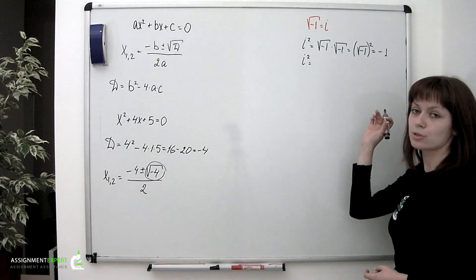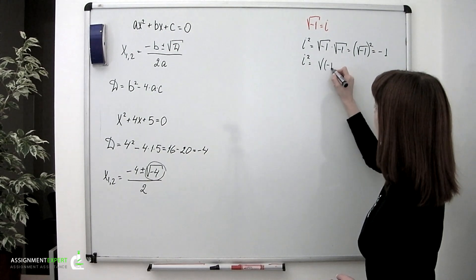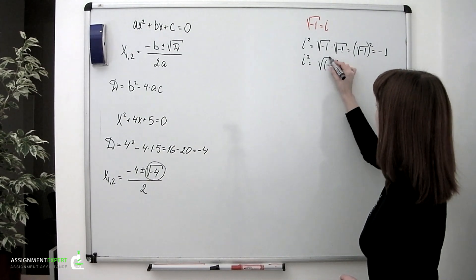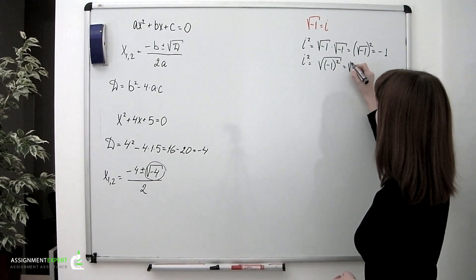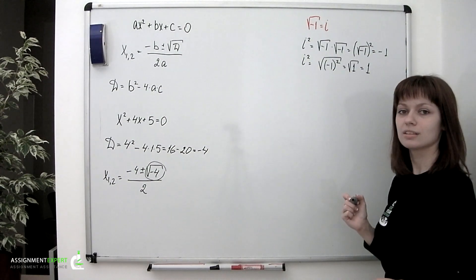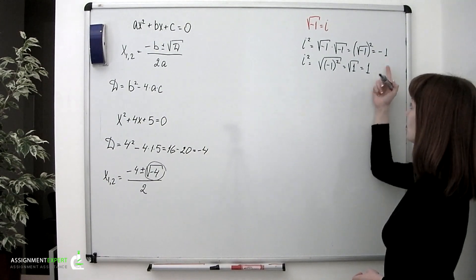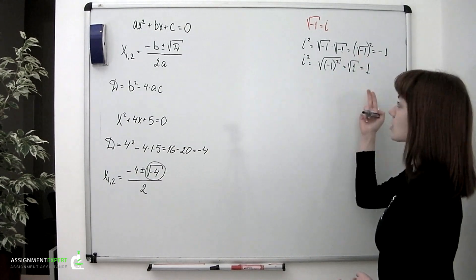But consider this. This expression may also be given like this, which is also correct. But it is equal to square root of positive 1, which equals simply 1. So we obtained completely different results, and that makes us think that this whole concept is controversial.